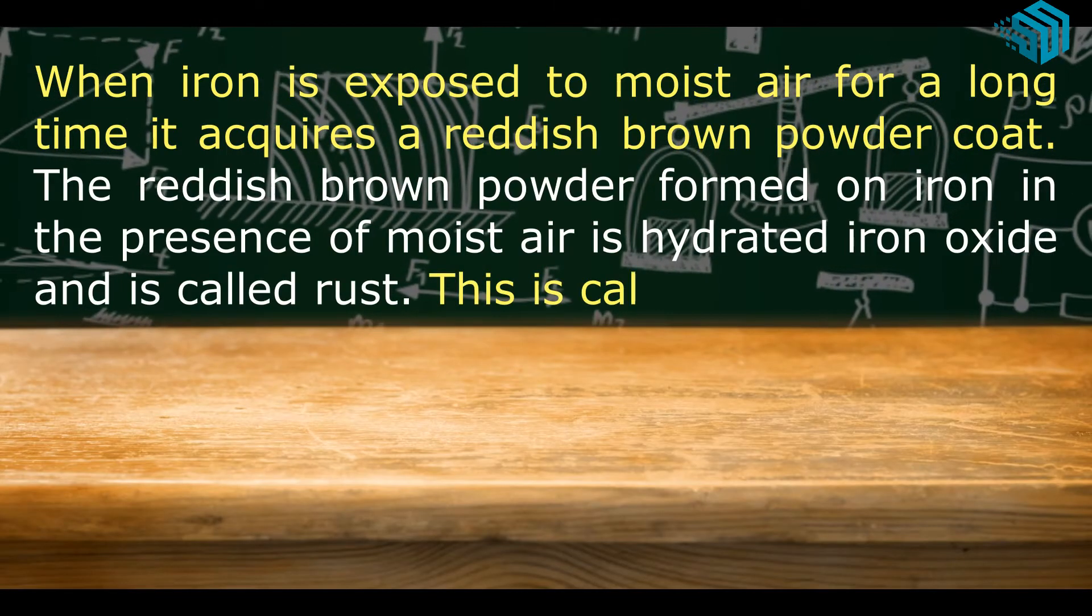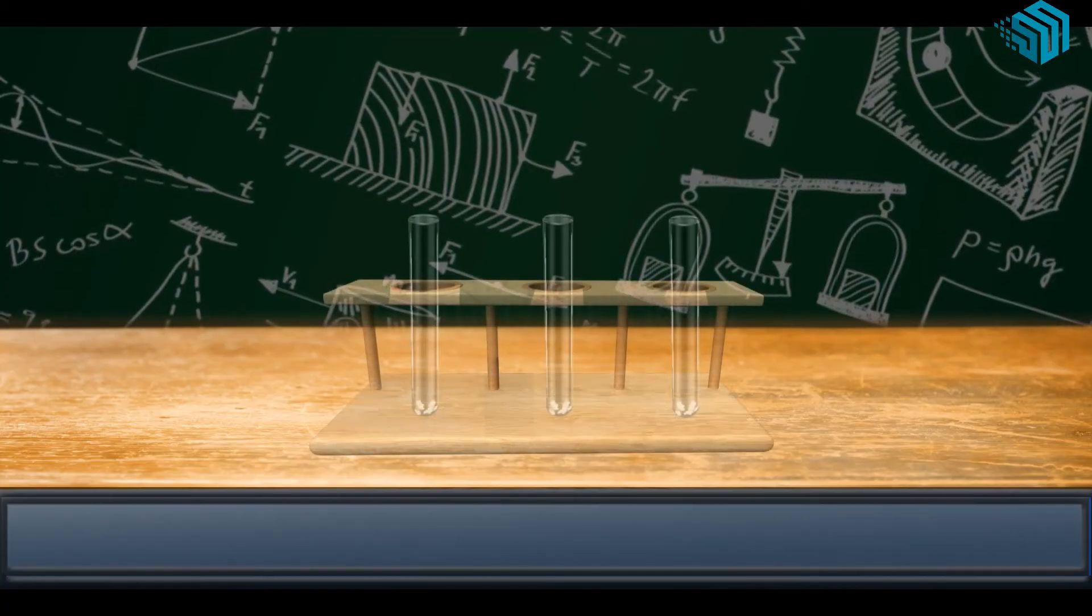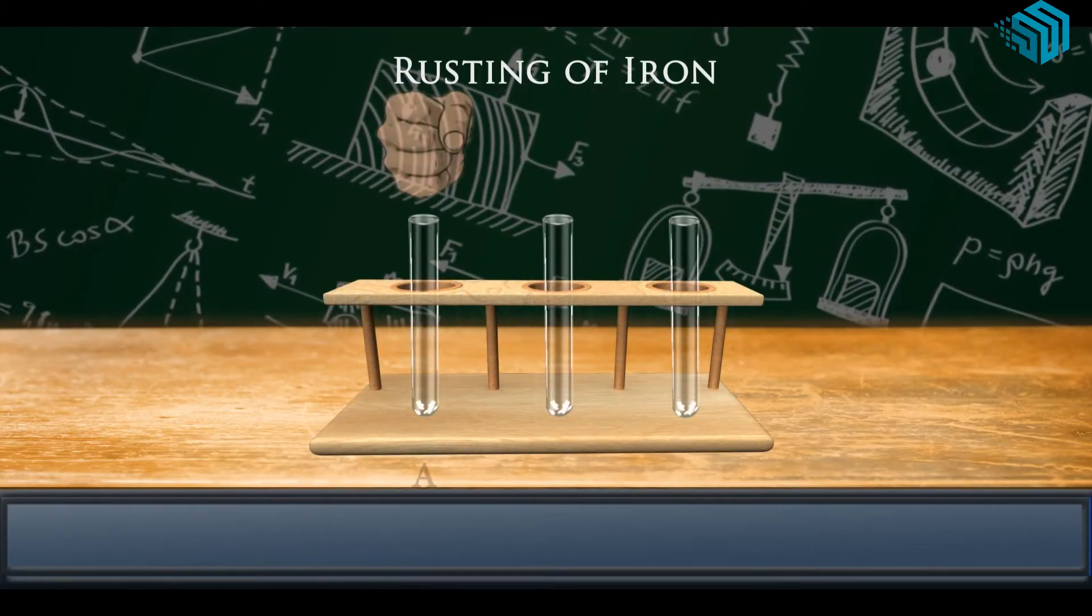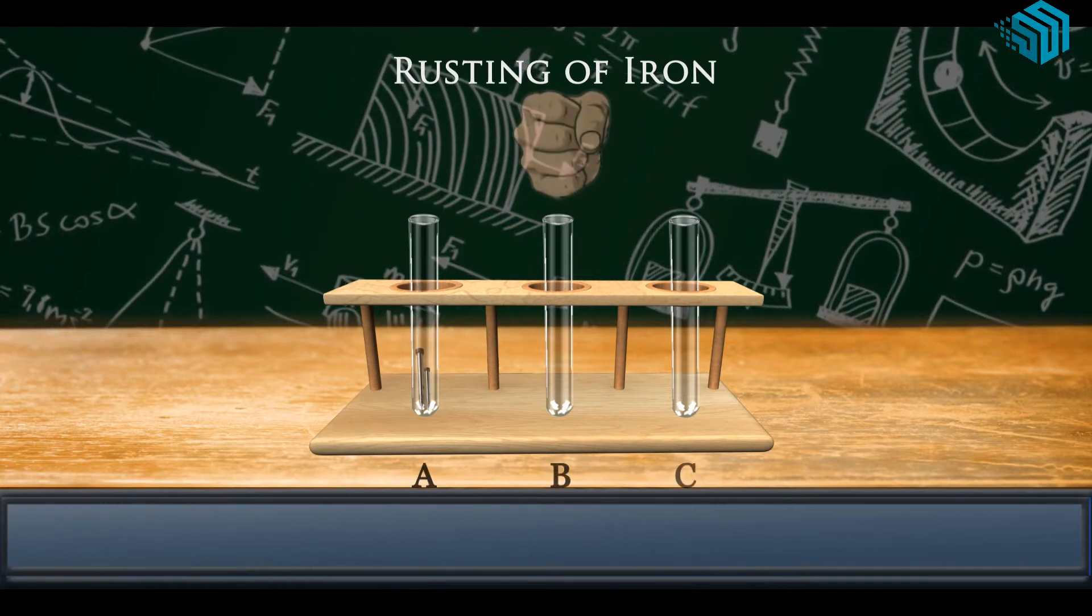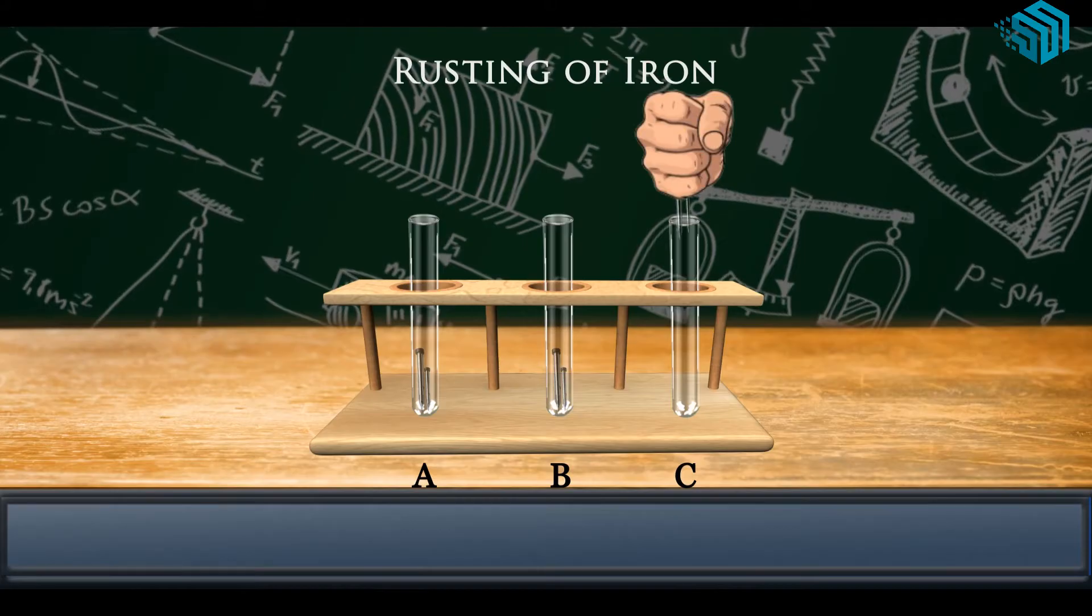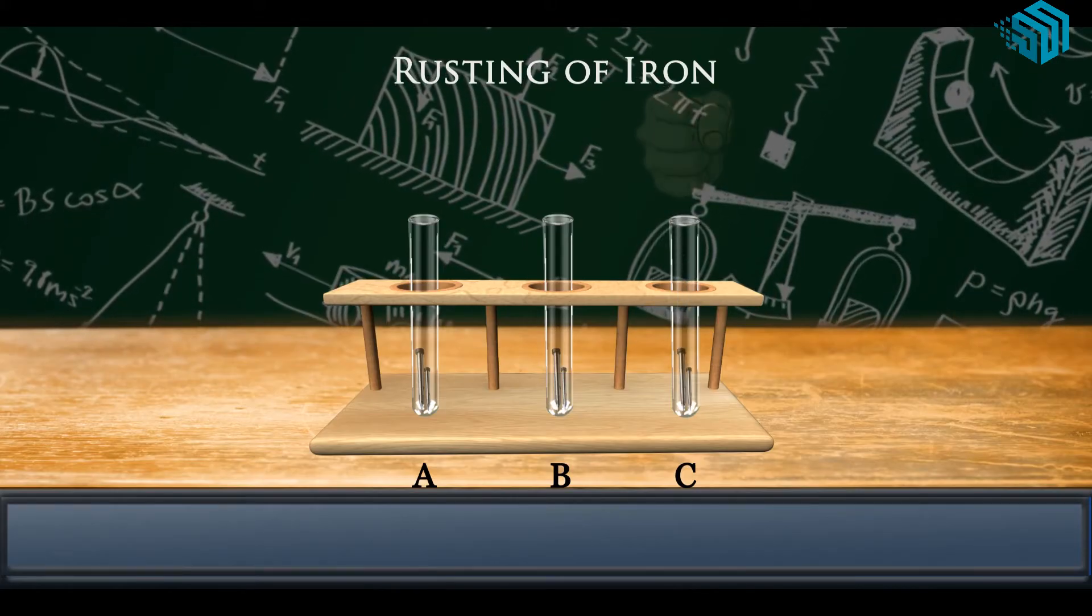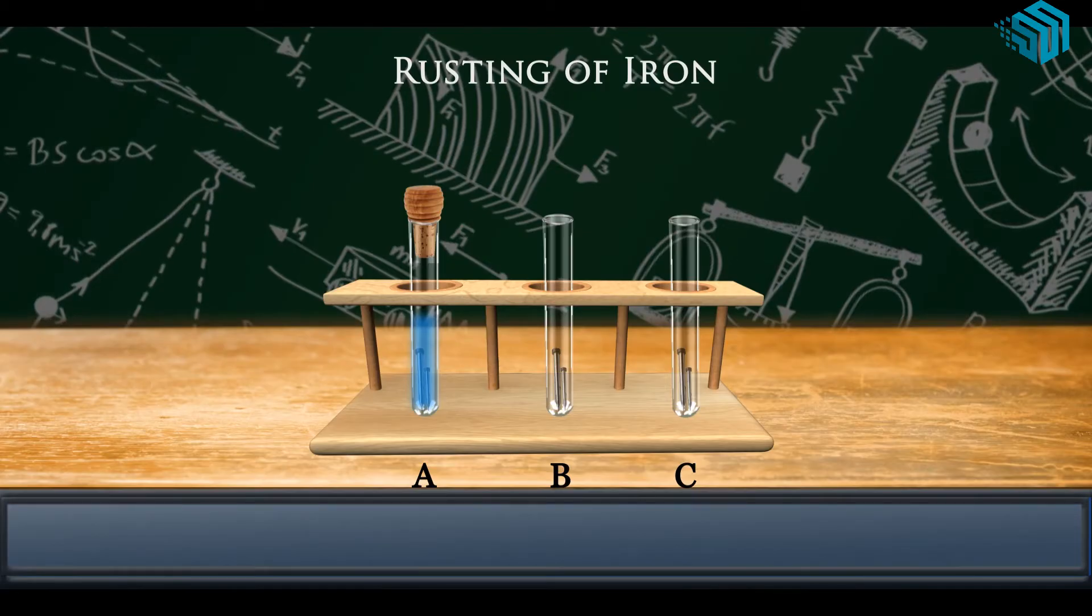This is called rust, and the process is called rusting of iron. Take three test tubes and place clean iron nails in each of them. Test tubes are labeled A, B, and C. In test tube A, pour some water and cork it.